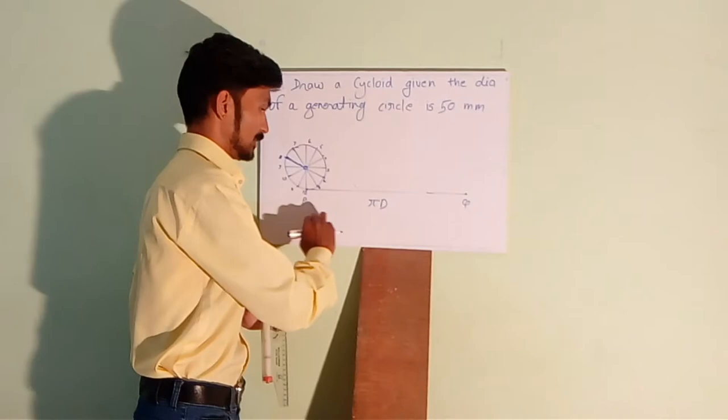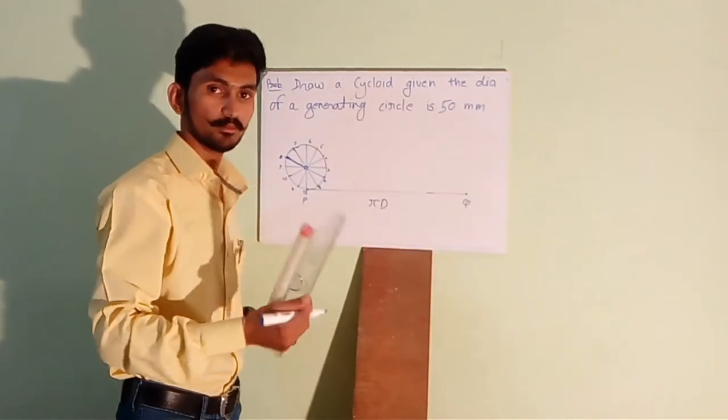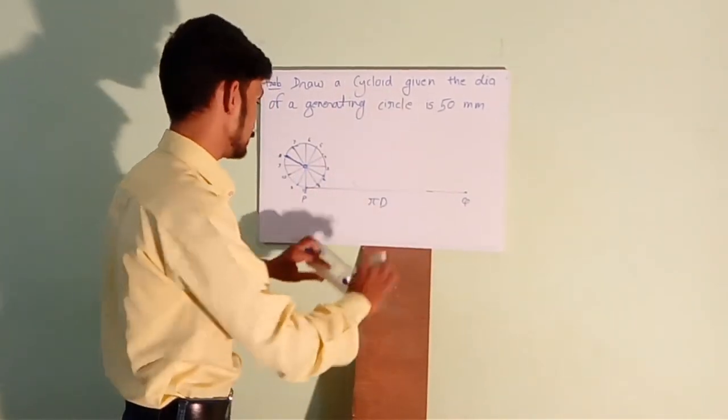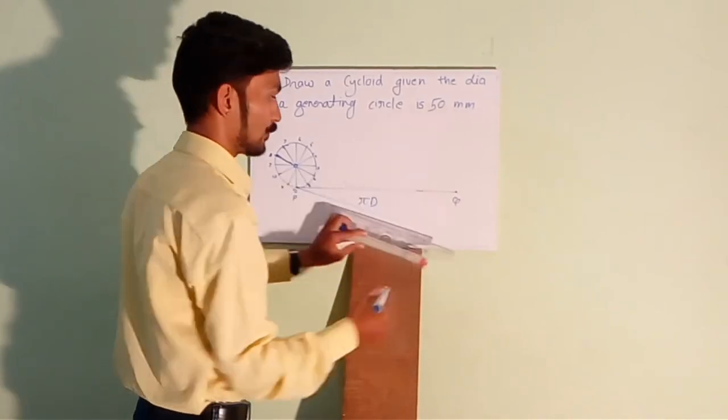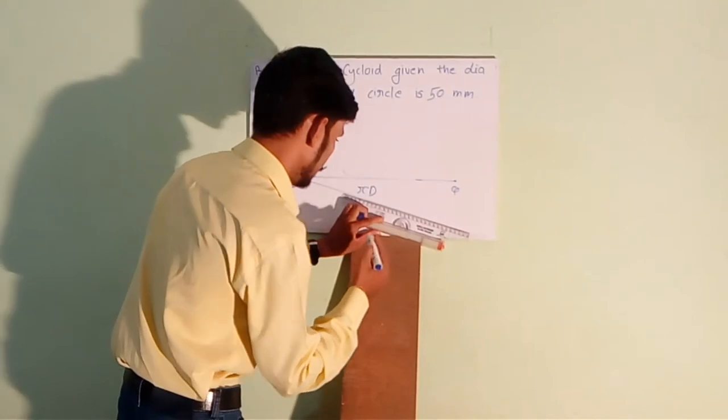Now, divide PQ into same number of equal parts which is 12. We will use the same method we earlier used for drawing the diagonal scales.